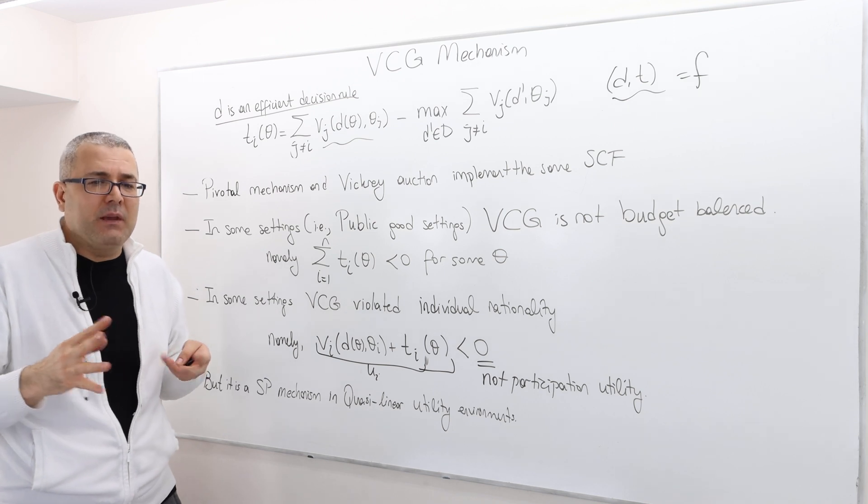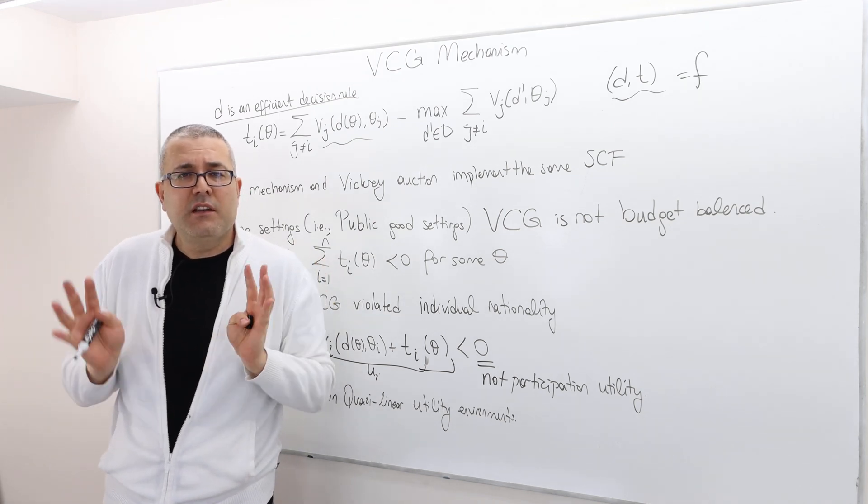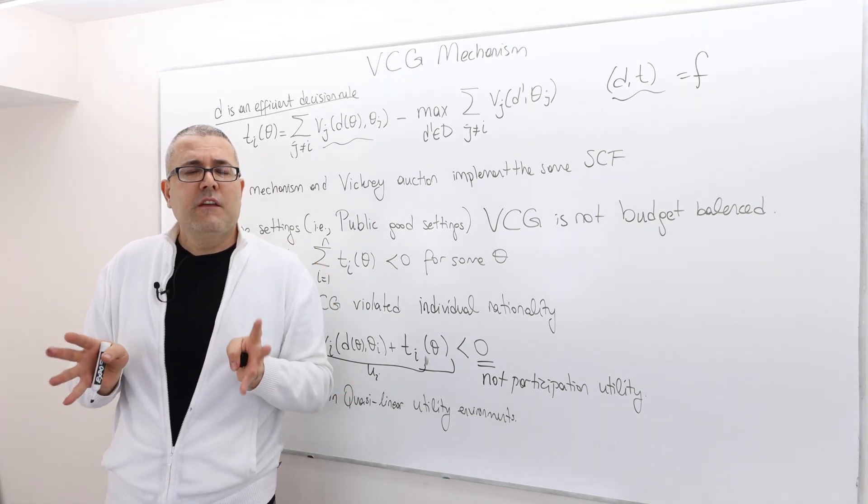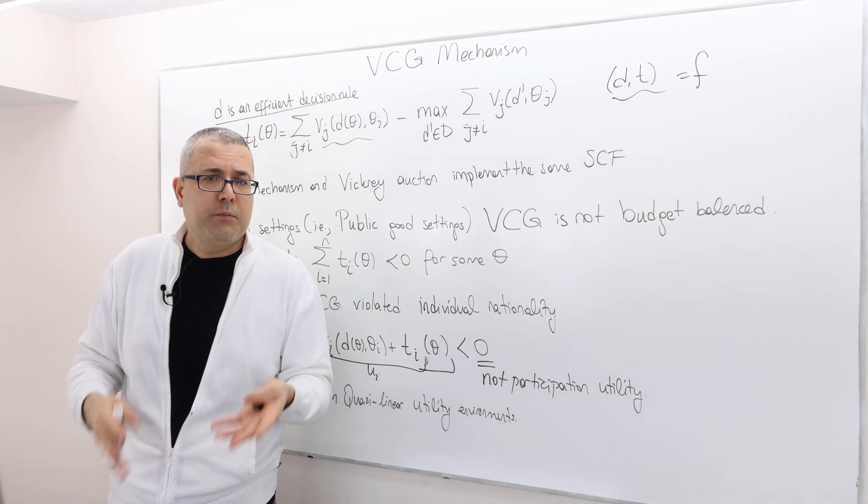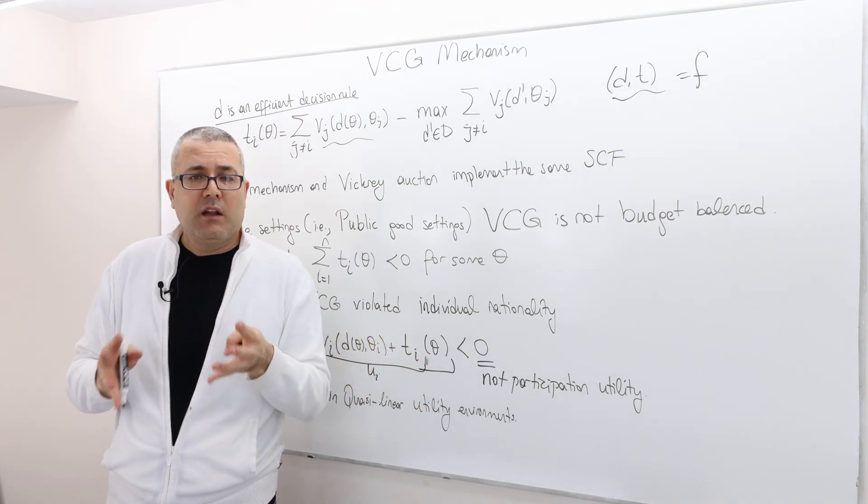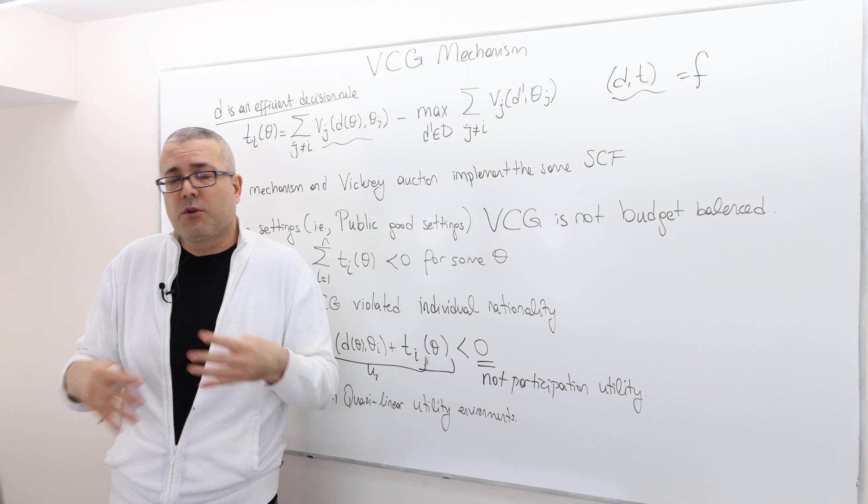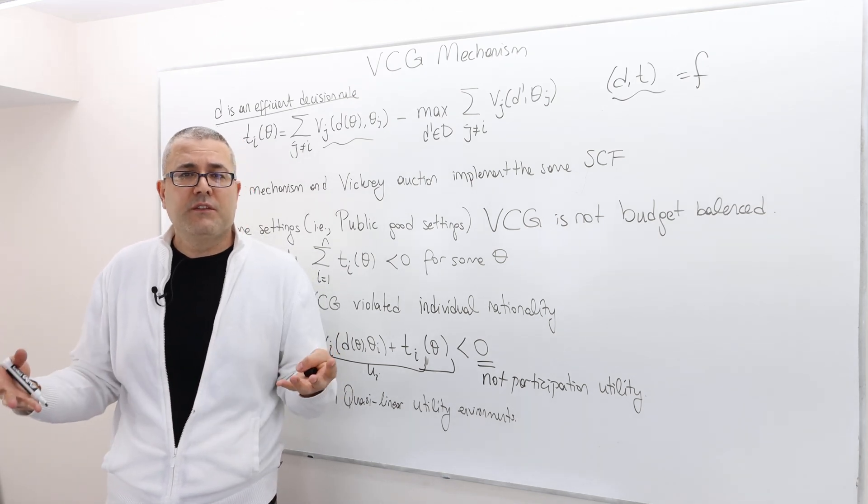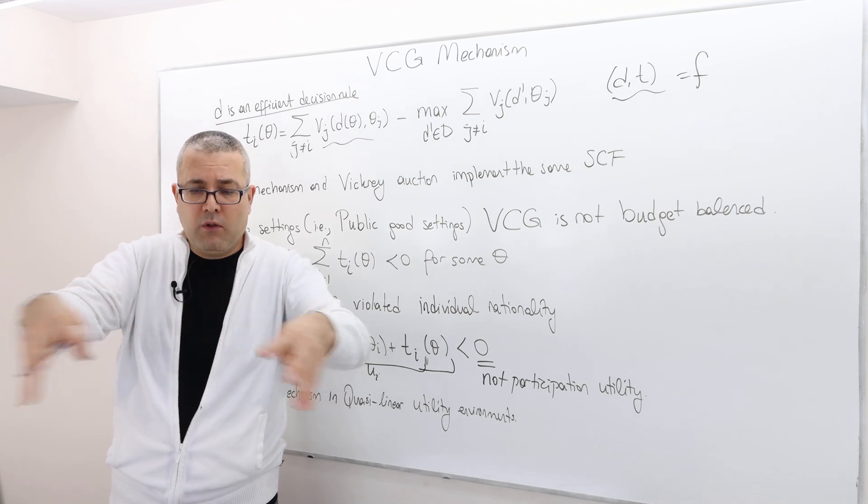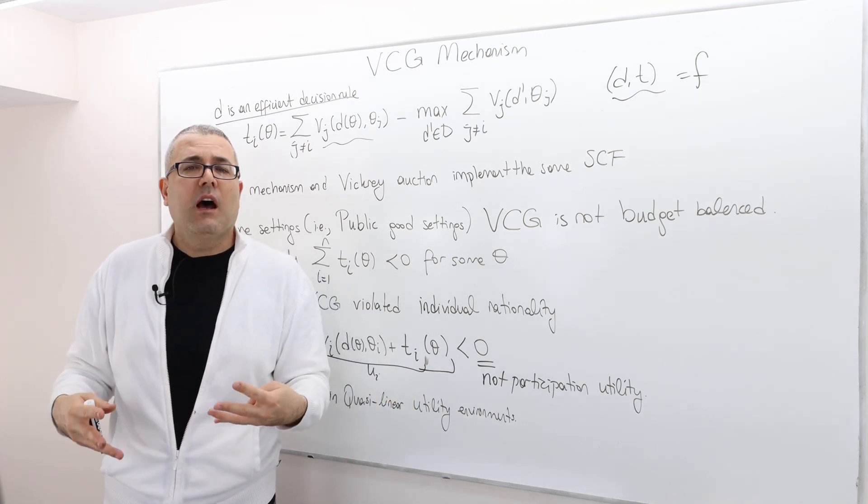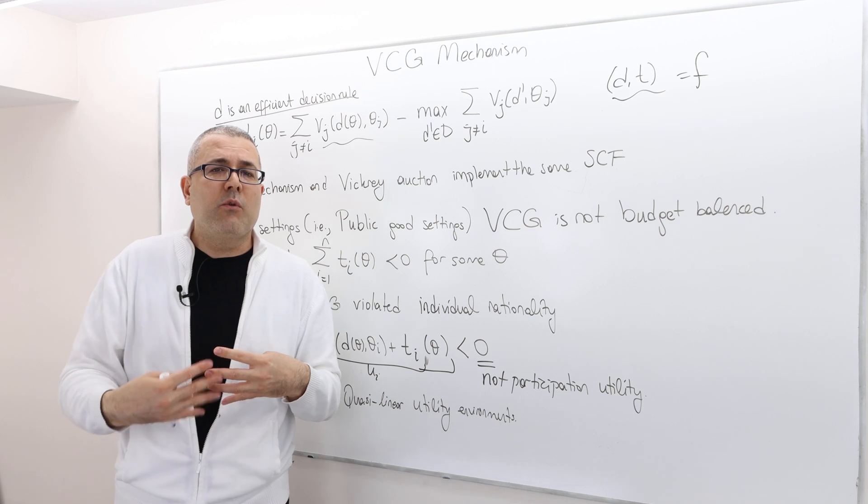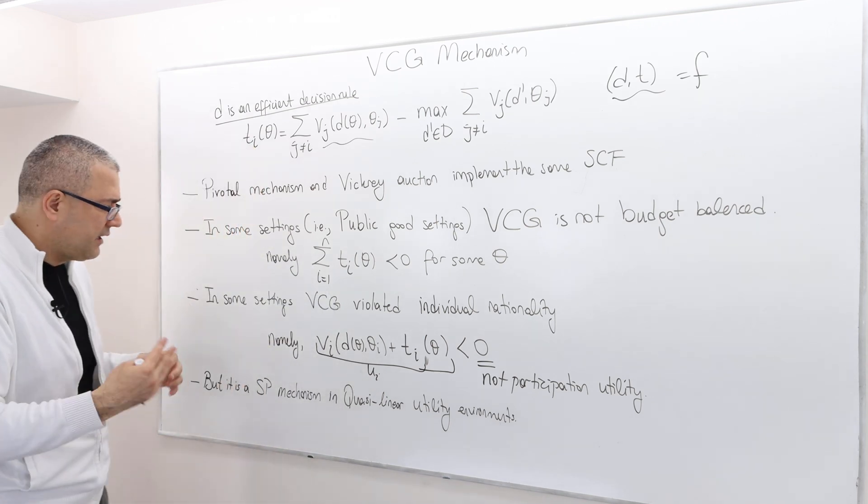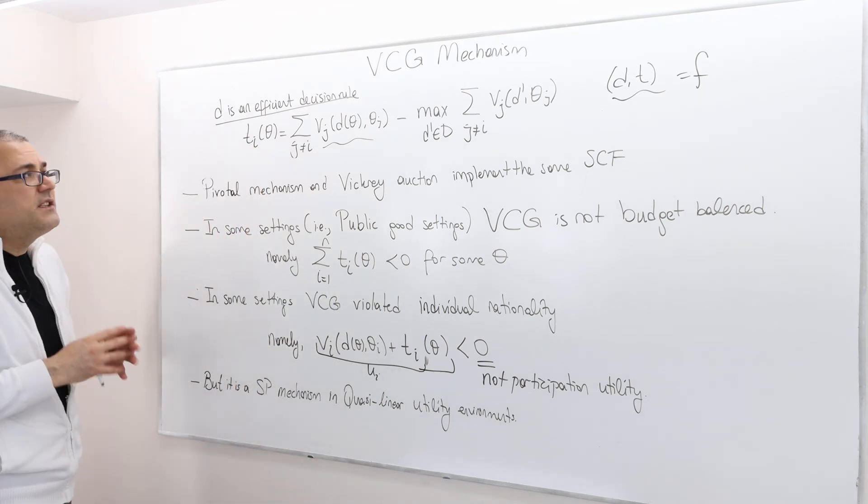So that's a bad thing because as a mechanism designer if you think the VCG is going to work because it's strategy proof, well that's wonderful, but nobody or some people have no incentive to enter. So that's a problem because you want all the candidates to enter to your mechanism but some of them have actually no incentive to enter. So that's a problem as well.